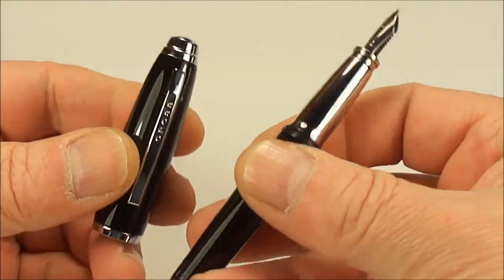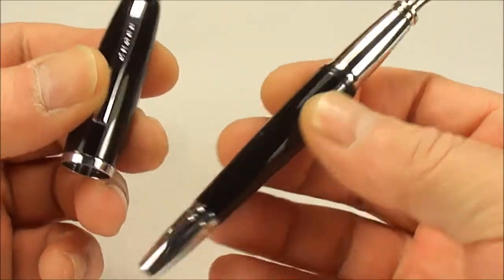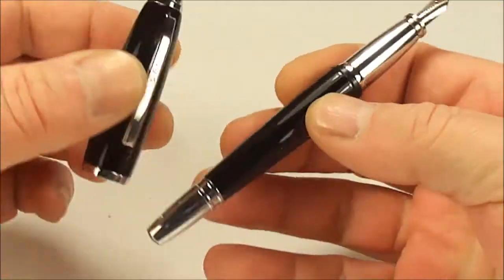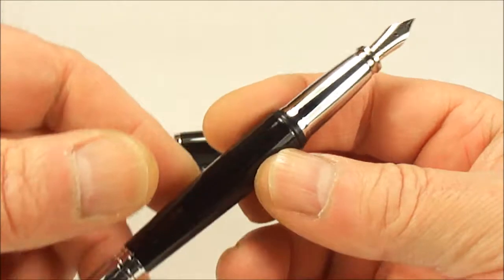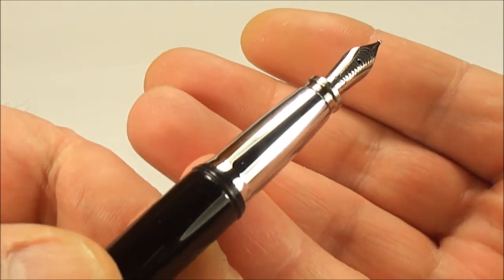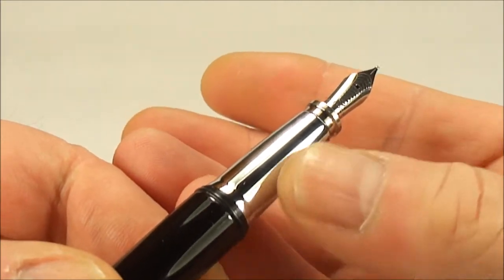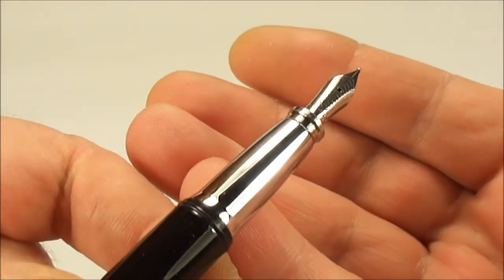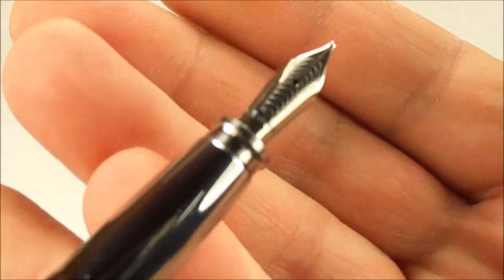So as you can see, you can see shiny chrome everywhere. The section there, this quite elongated section, goes to a—it sort of thins down towards the nib there. It is in chrome. And if we show you the nib...